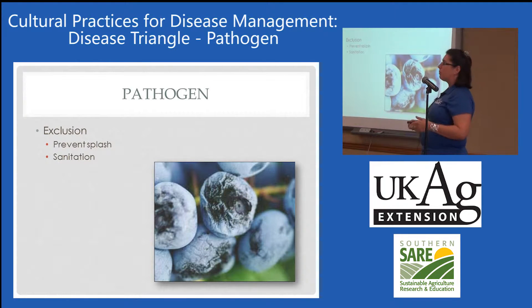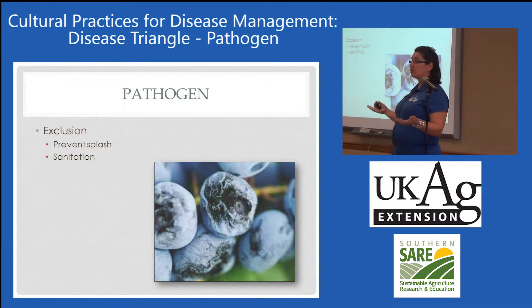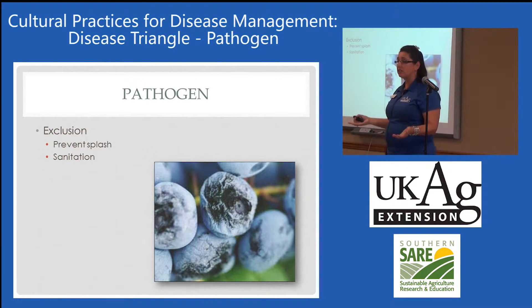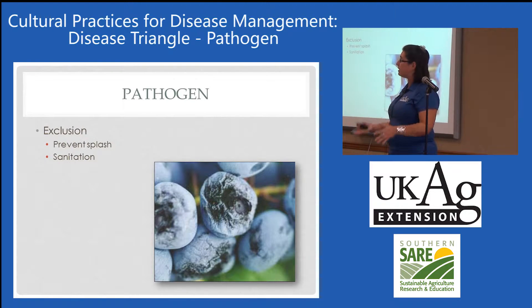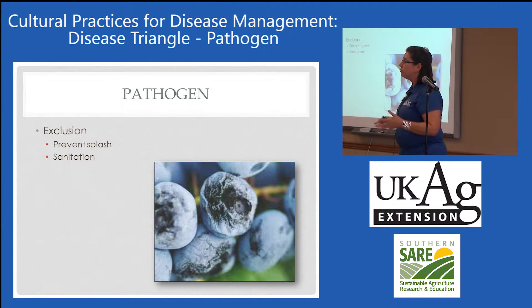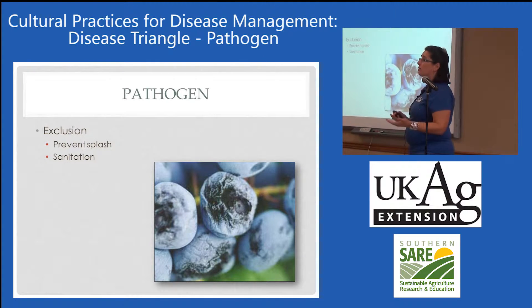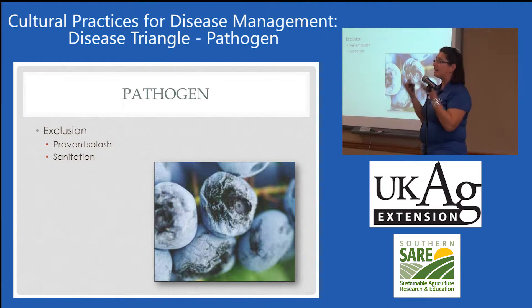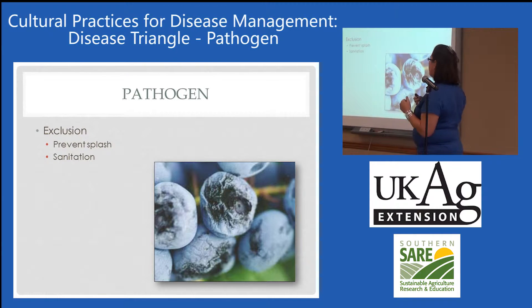Also preventing splash — some of our pathogens are soil-borne pathogens and they splash up. By using things like mulch, you're preventing that splash and preventing moving soil-borne pathogens into the canopy.